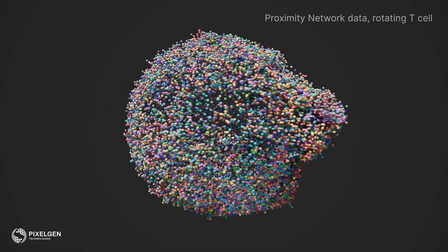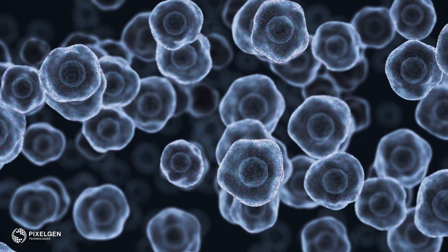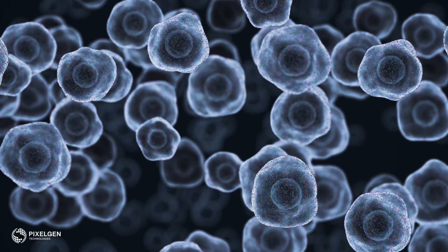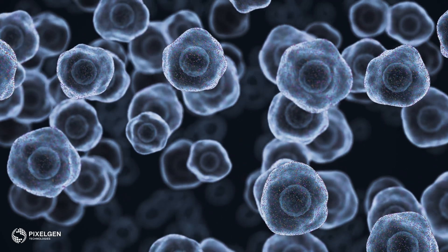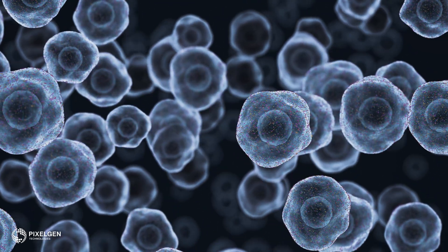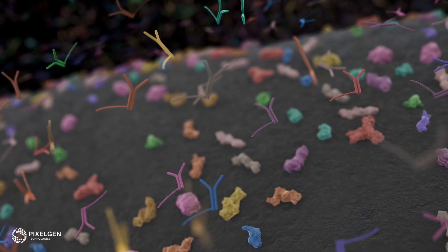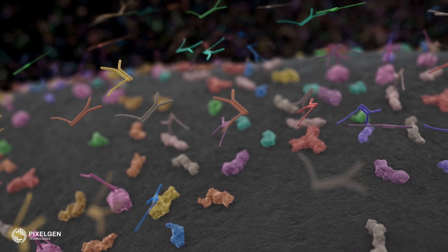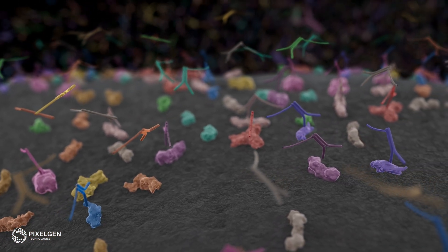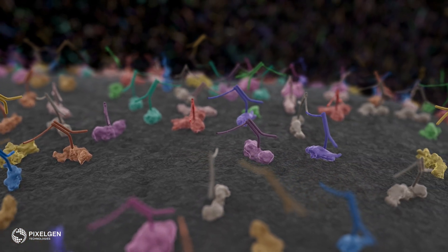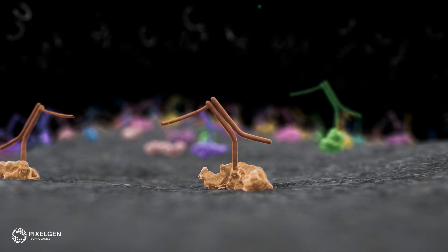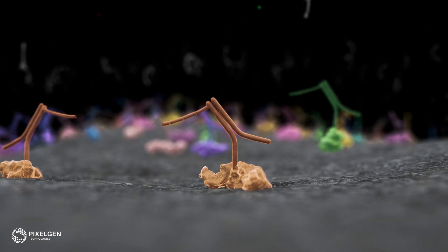The Proximity Network Assay workflow starts with cells in suspension being fixed using PFA to immobilize the proteins on its surface. In the next step, DNA-barcoded antibodies are added to the mixture and bind to their complementary protein targets on the cell surface.